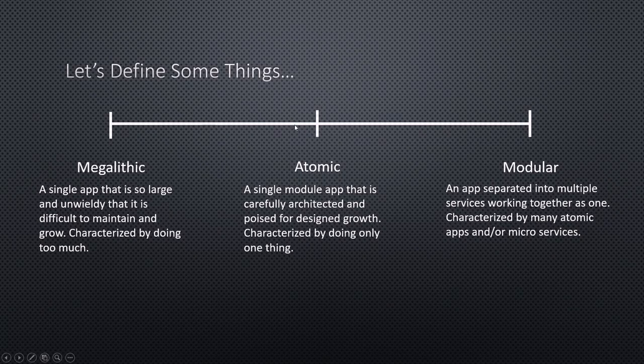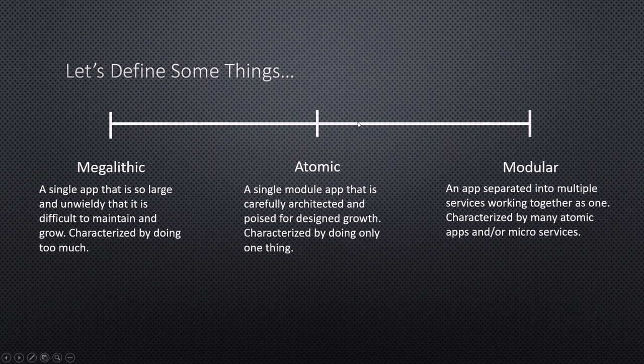An atomic app is a single application that does one thing really well. An example would be a blog — some software that handles a blog, you can make posts, and that's all it does. But if we wanted to add a forum, we could add new fields into the database, new business logic, and all these things. As we do that, we start going from the atomic app towards a megalithic app — it starts having too much going on in one application. The modular approach would be to create a separate app that handles just the forum and wire those two things together.